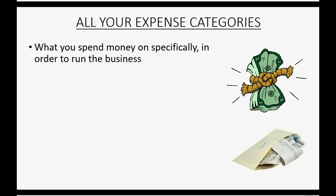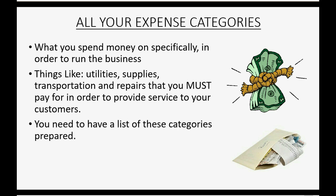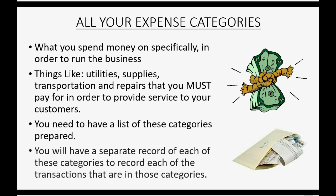The expense categories are very easy. All you have to do is make a list of what you spend money on specifically in order to run your business — things like utilities, supplies, transportation, and repairs; things that you must pay for in order to provide service to your customers. You need to have a list of these categories prepared, and each category will be a separate record. For example, if you pay for utilities, you would write that down in an account called utilities expense, and every time you pay for repair, you write that in a separate account called repair expense, and so on.